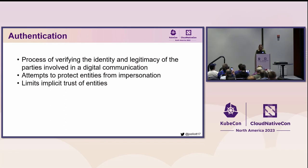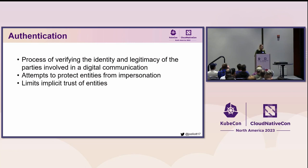Authentication is the next core component of PKI. It's the process of verifying the identity and legitimacy of the parties involved in digital communication. Not all entities have good intent when initiating communication or requesting information — they might impersonate a known entity to gain access to sensitive data. Authentication limits implicit trust in your ecosystem by enabling entities to verify identities and, as a result, the authenticity of the public keys being shared.